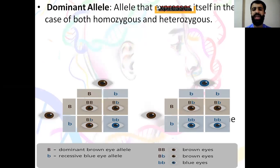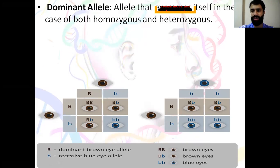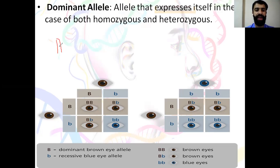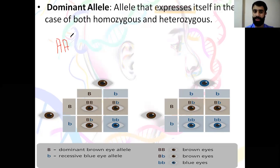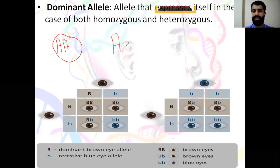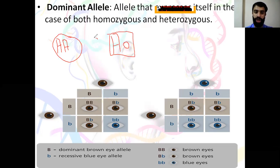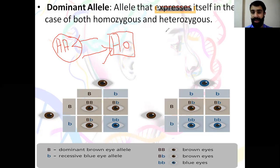Moving now to dominant and recessive. A dominant allele is the strong allele — it can be expressed either in the homozygous or in the heterozygous. For example, blood group A can be expressed when you have AA (homozygous) or AO (heterozygous), since O is recessive. So allele A is dominant because it is expressed in both homozygous and heterozygous cases.